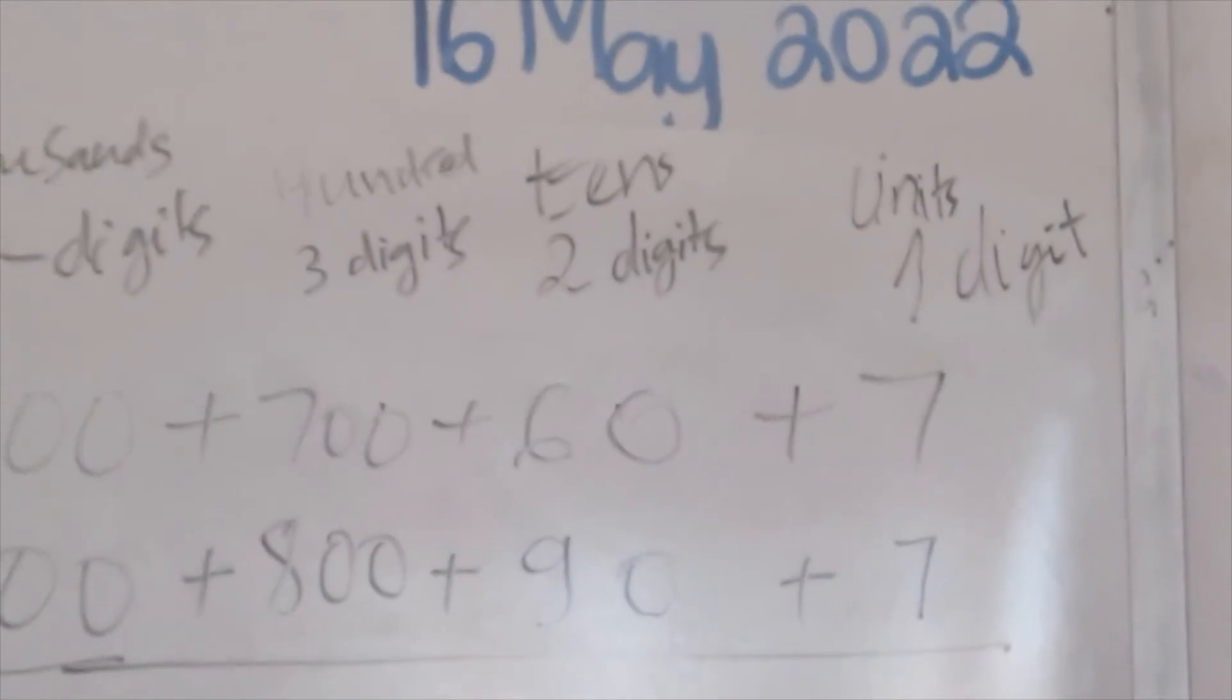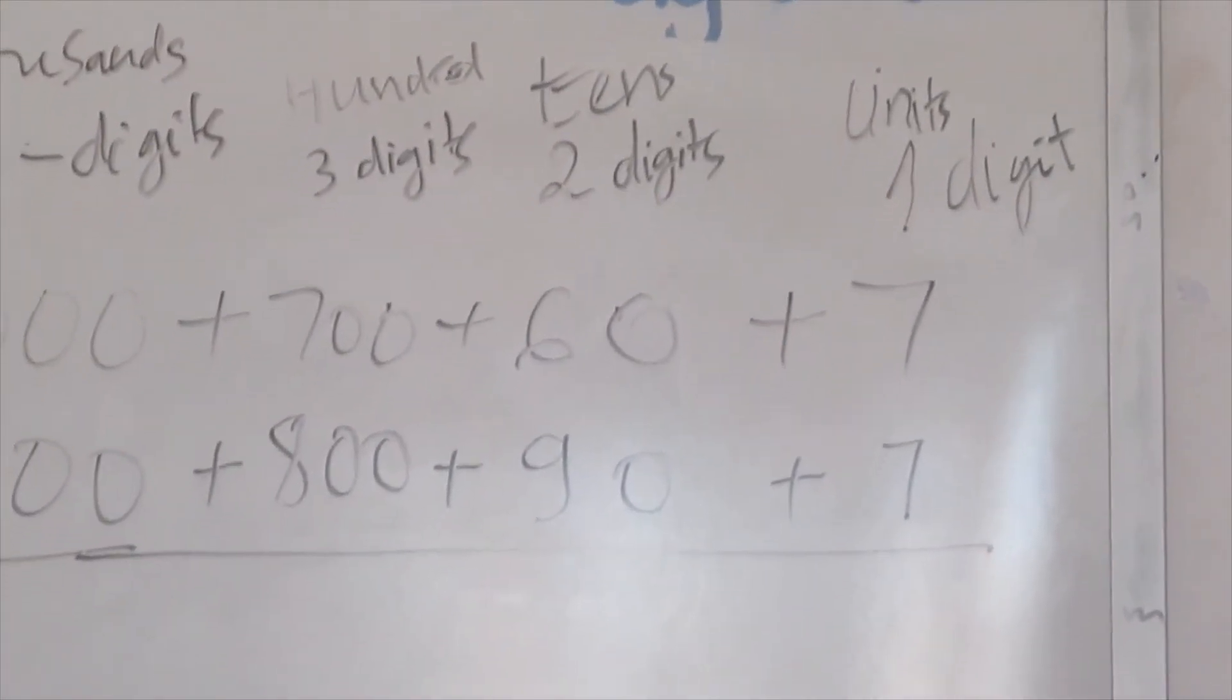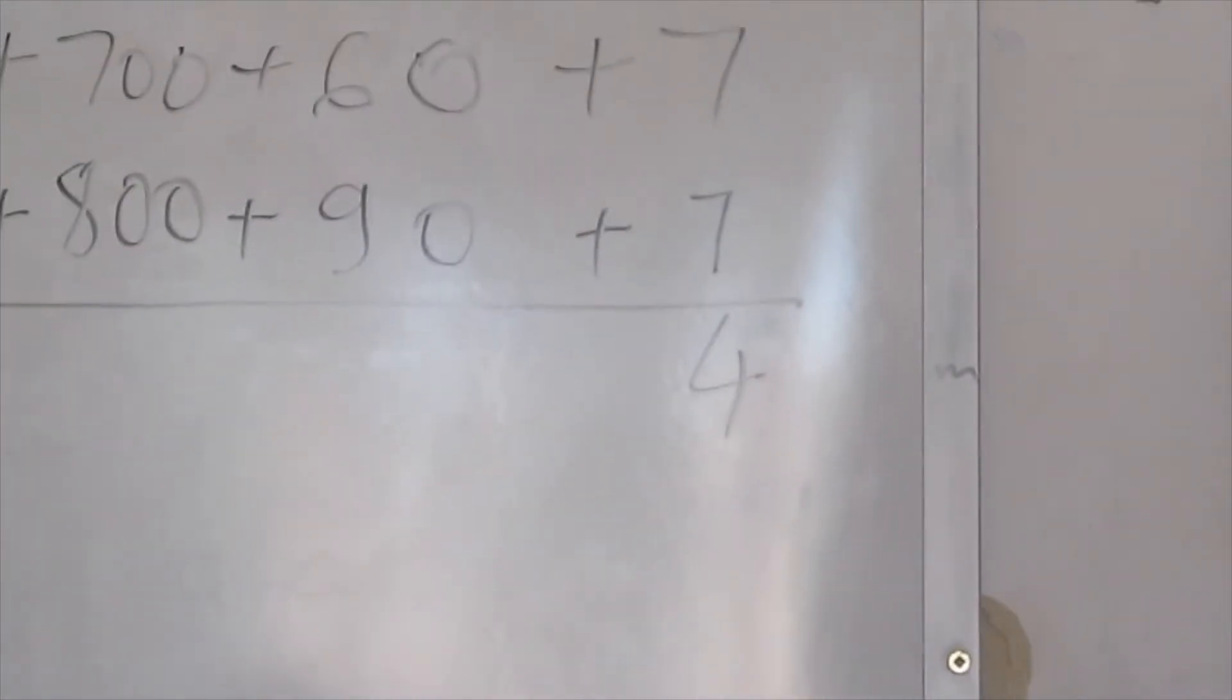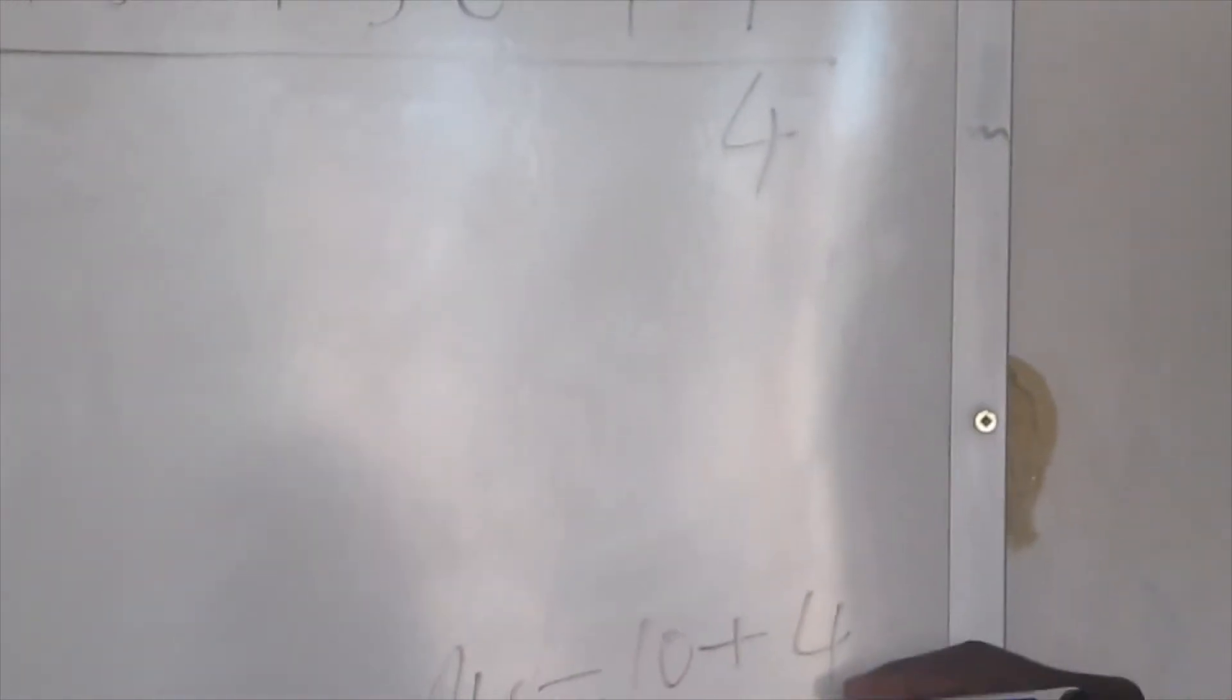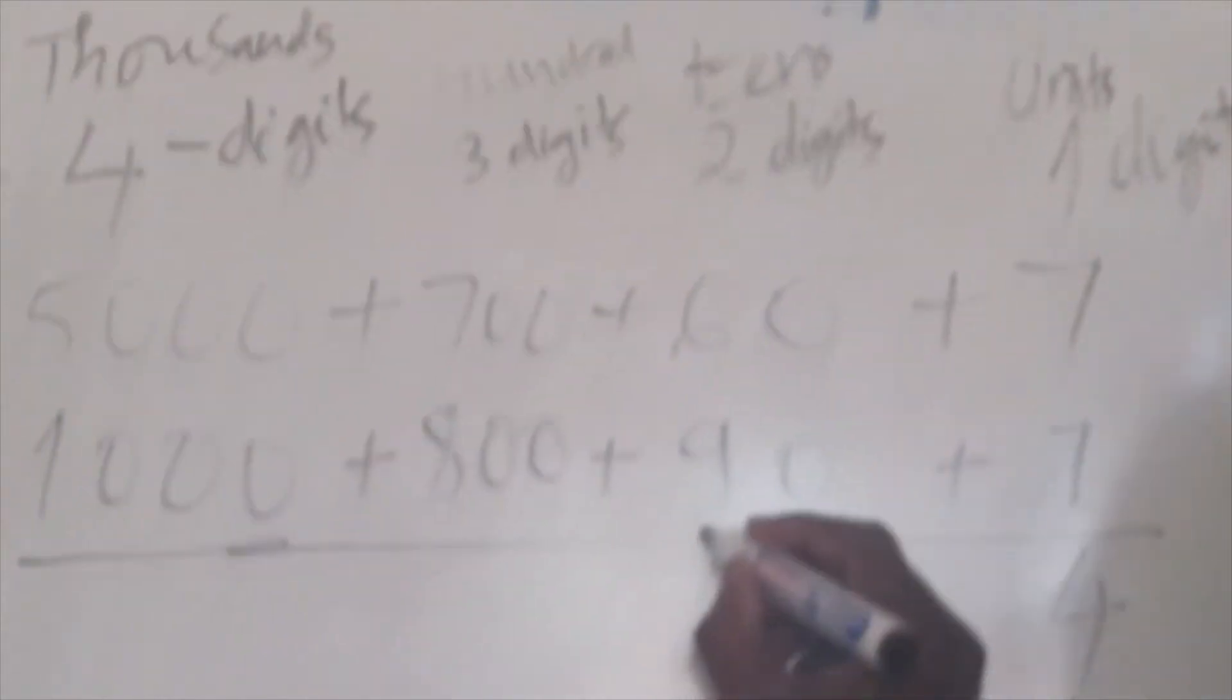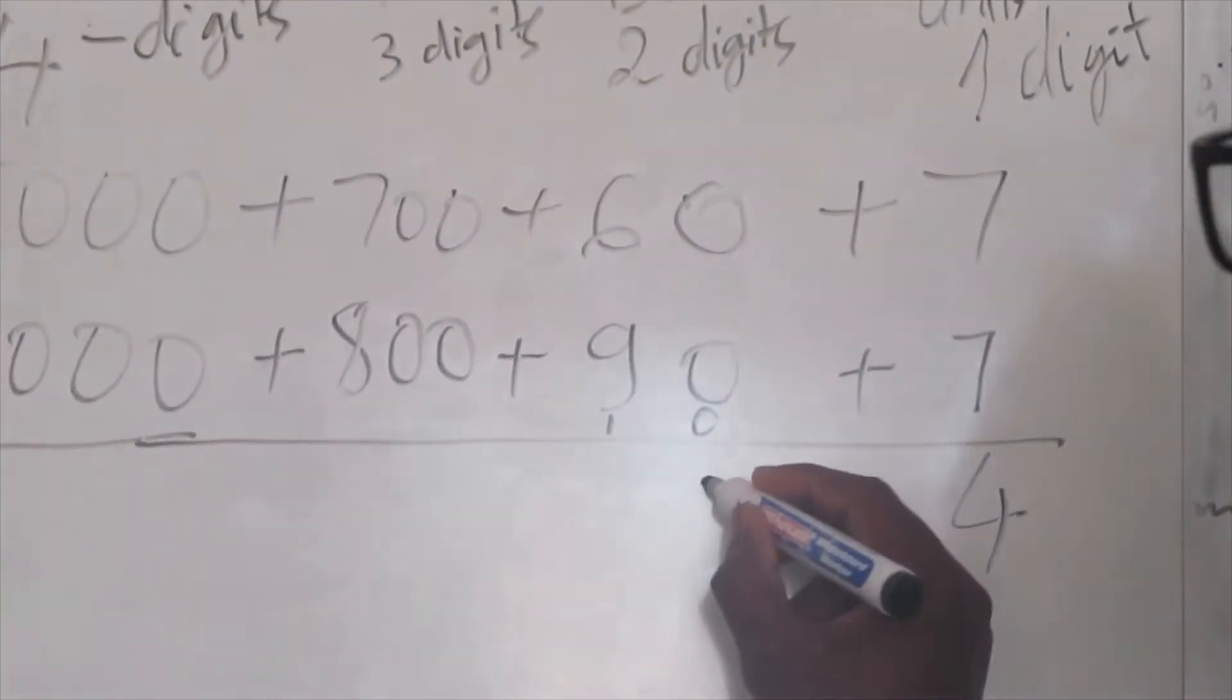Now we're going to start adding. 7 plus 7 equals 14. We have 14, but the rule states only one digit is allowed here. So we write the 4. This one here is 10 because 14 is 10 plus 4. This one is 10 and this is the unit. We just need the unit here, so we put the unit, and this 10 will come to this side here.